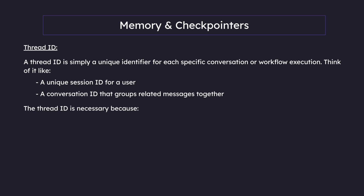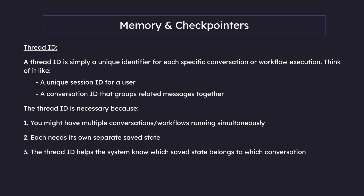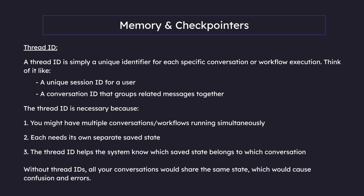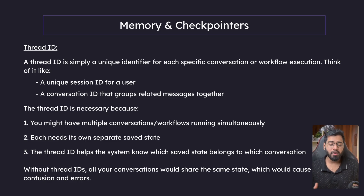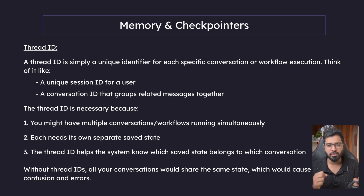A thread ID is necessary because you might have multiple conversations or workflows running simultaneously — each needs its own separate saved state. The thread ID helps the system know which saved state belongs to which conversation. Without thread IDs, all your conversations would share the same state, which would cause confusion and errors. So to introduce memory and persistence, we need two things: a checkpointer and a thread ID.